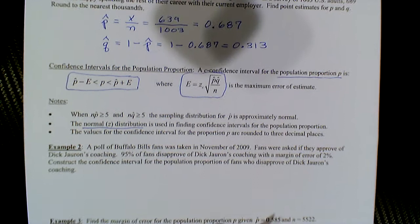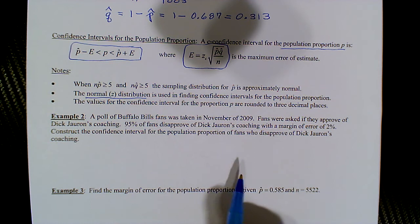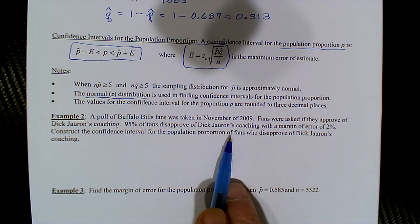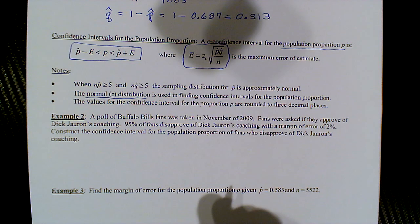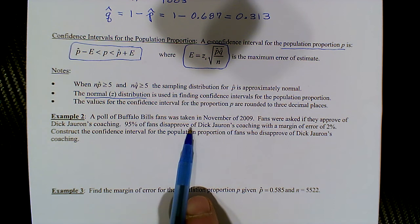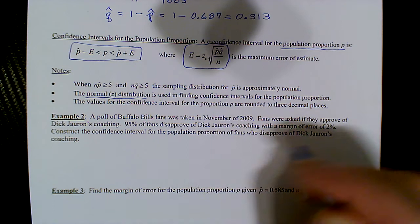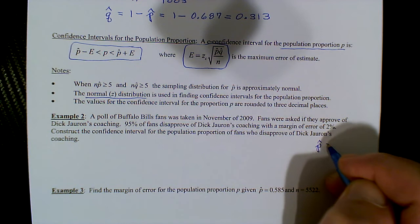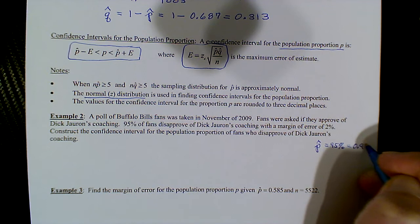This example goes back to Buffalo Bills fans. Dick Gerron was coach of the Buffalo Bills and wasn't very successful. In this sample, 95% of the fans disapproved of his coaching, so p-hat is 0.95.